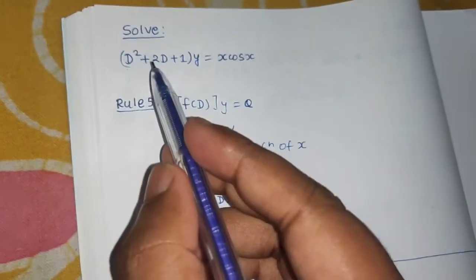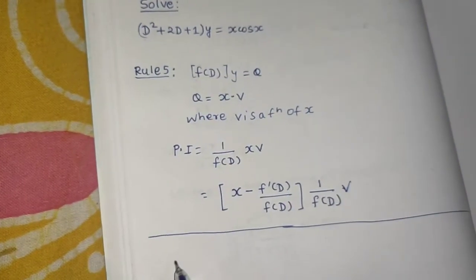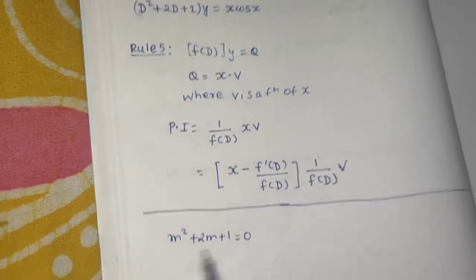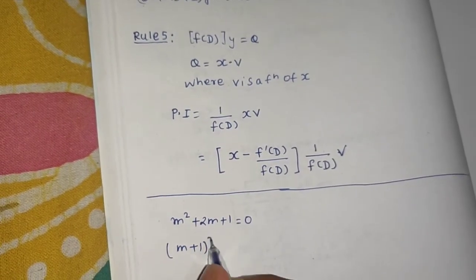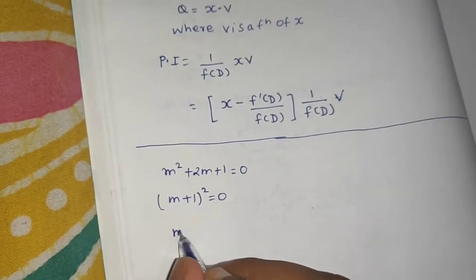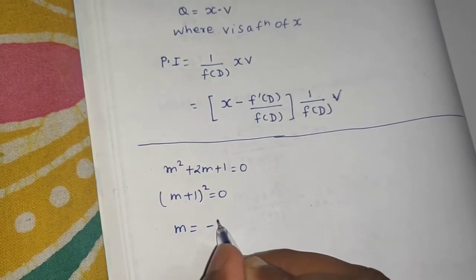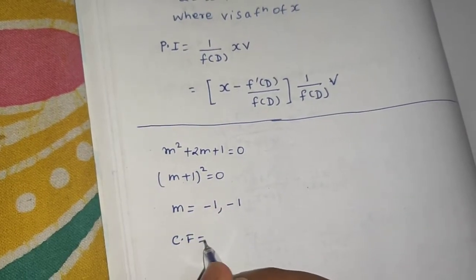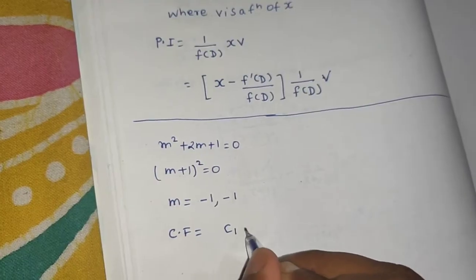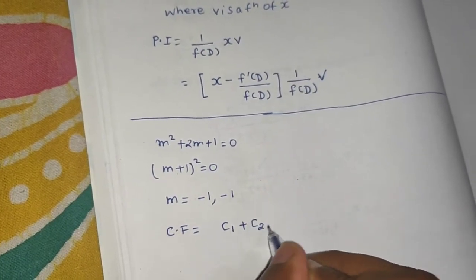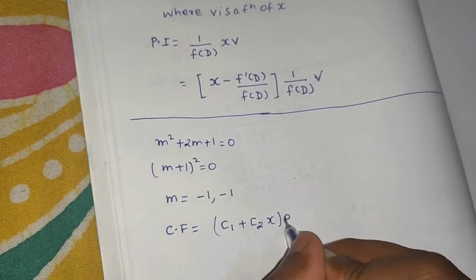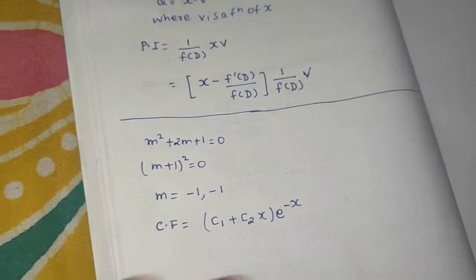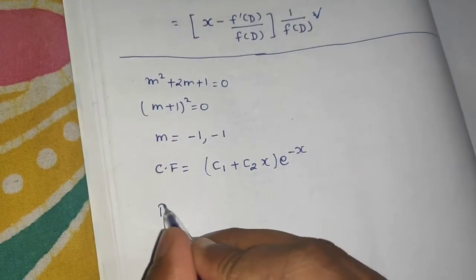First, converting to the auxiliary equation: m² + 2m + 1 = 0, which is (m+1)² = 0, giving two equal roots m = −1, −1. Since we have equal roots, the complementary function is (c₁ + c₂x)·e^(−x). The complementary function is done.